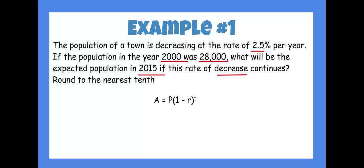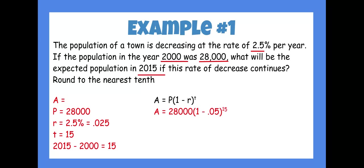Make sure you copy down your formula and write the key information on the right-hand side. P is 28,000, our rate 2.5% changed to a decimal is 0.025, and the elapsed time would be 15, so our time would be 15 years. Plug all those pieces into the necessary spots of the formula.